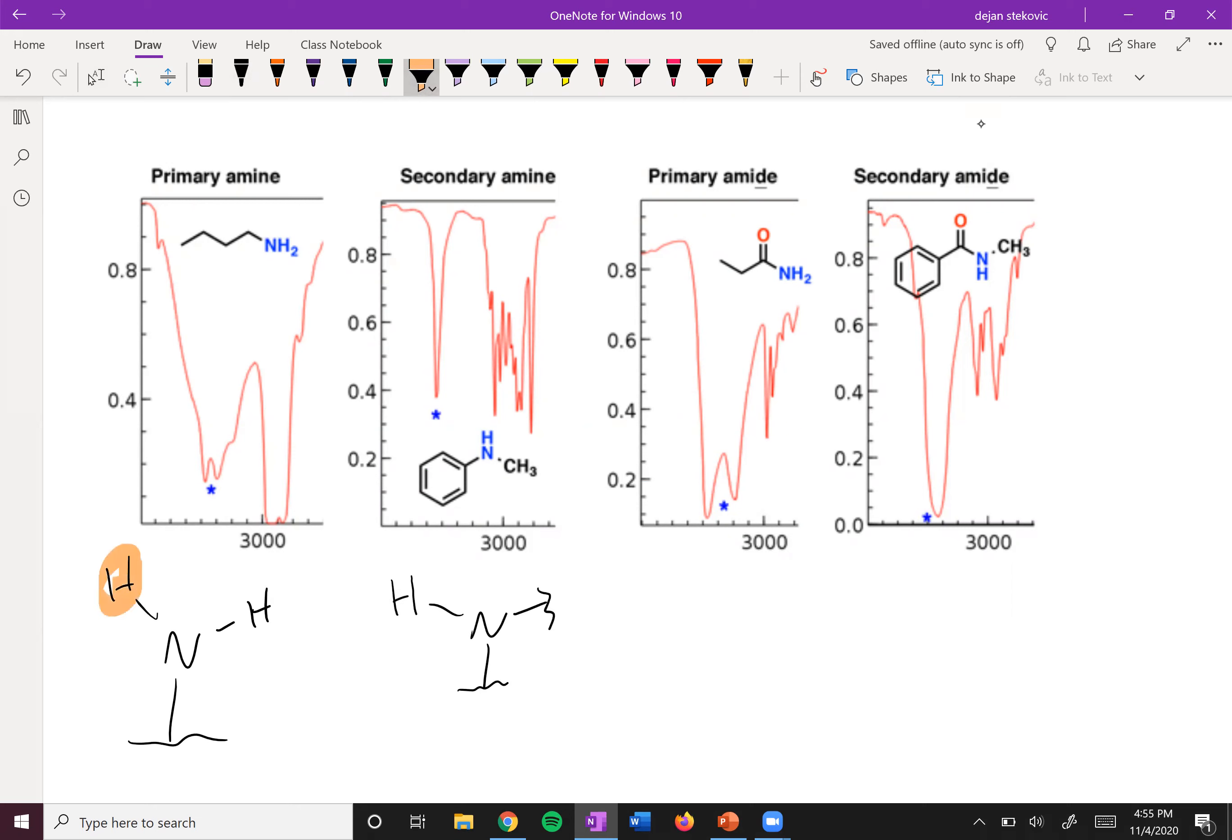If you have a primary amine that has two H's, you're actually going to see two peaks. You see how this kind of has two little bumps on it that tells you it's a primary amine.